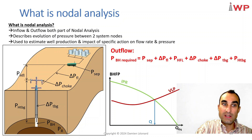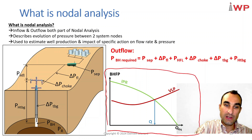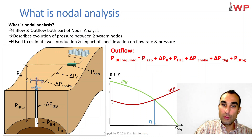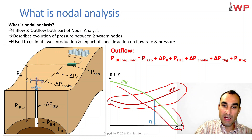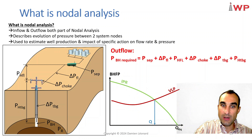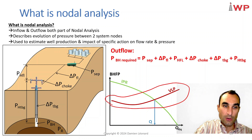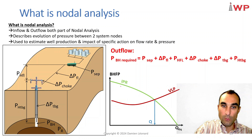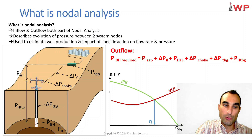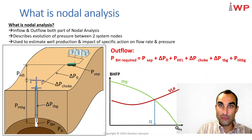Node analysis is widely used in well performance, and it's very important to understand how the VLP and the IPR change when you change a specific parameter — for instance, what happens to your VLP when you change the wellhead pressure or open your choke, or what happens to your IPR if you change your reservoir pressure. Understanding these changes helps you understand how your bottom hole flowing pressure and your well production will change. I hope you now understand what is node analysis and that you will use it to do well performance so that you can increase your well production.